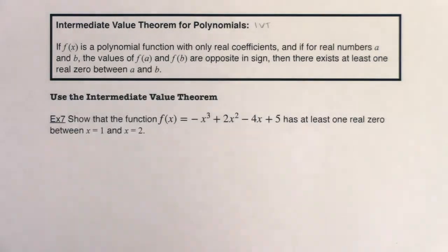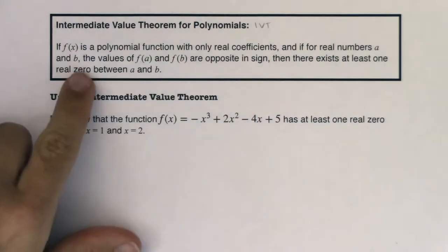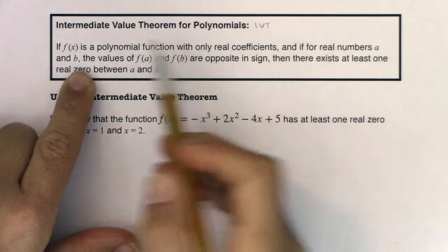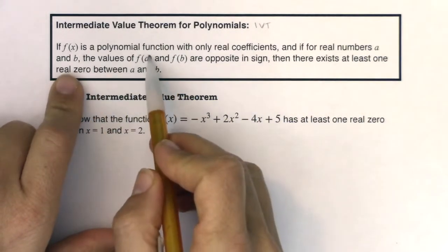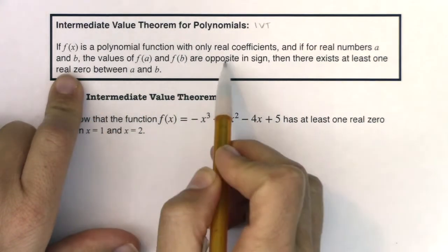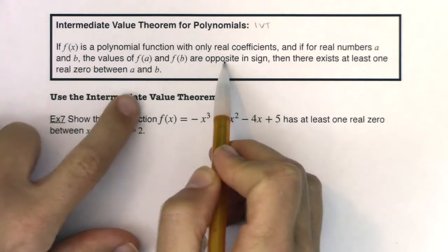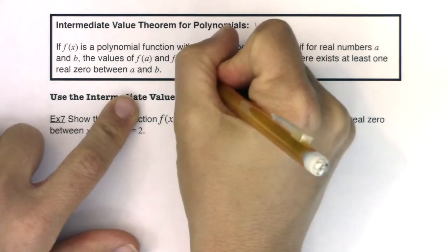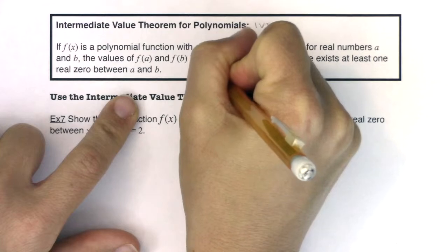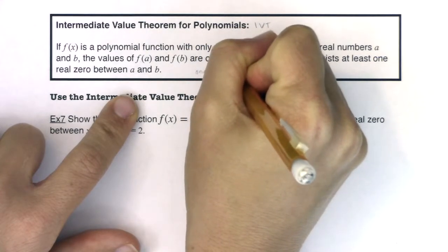And then for two numbers, a and b, whatever they happen to be, for x equaling a and x equaling b, if we find their function values, and they are opposite in sign, and when I say opposite in sign, this means one function value is positive, and one function value is negative.